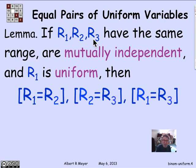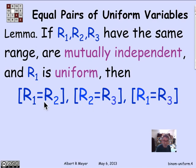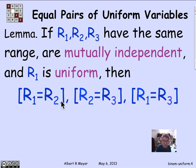I claim that each of the pairs — the event that R1 equals R2, the event that R2 equals R3, and the event that R1 equals R3 — are pairwise independent of each other. Now, these events overlap: there's an R1 in two of them and an R2 in two of them. So even though R1, R2, R3 are mutually independent, it's not immediately clear that these events are mutually independent.